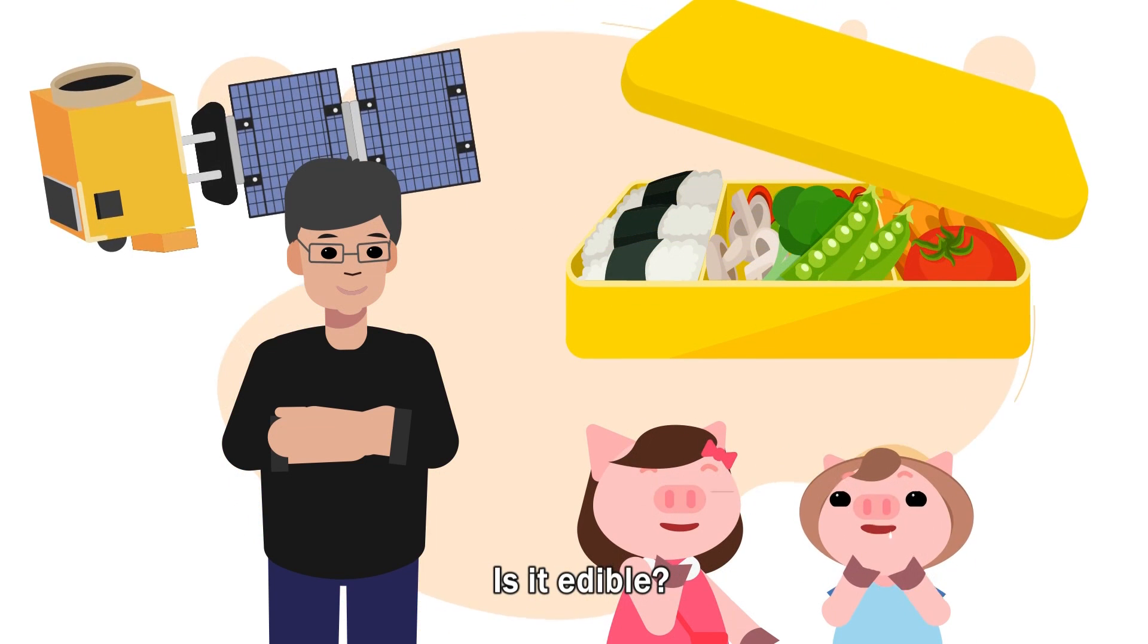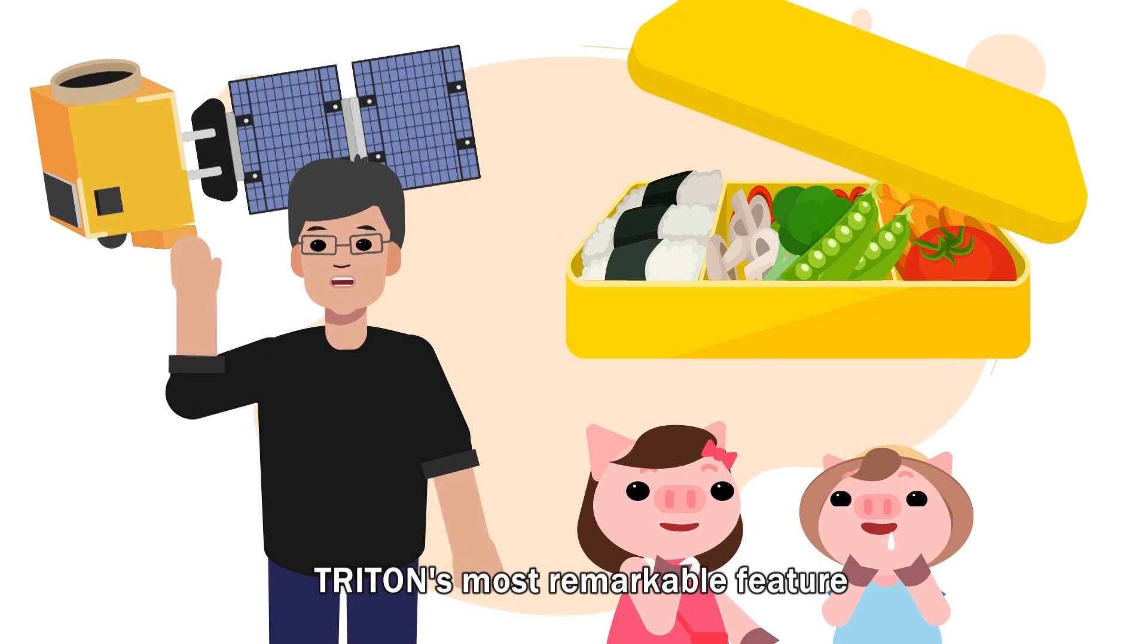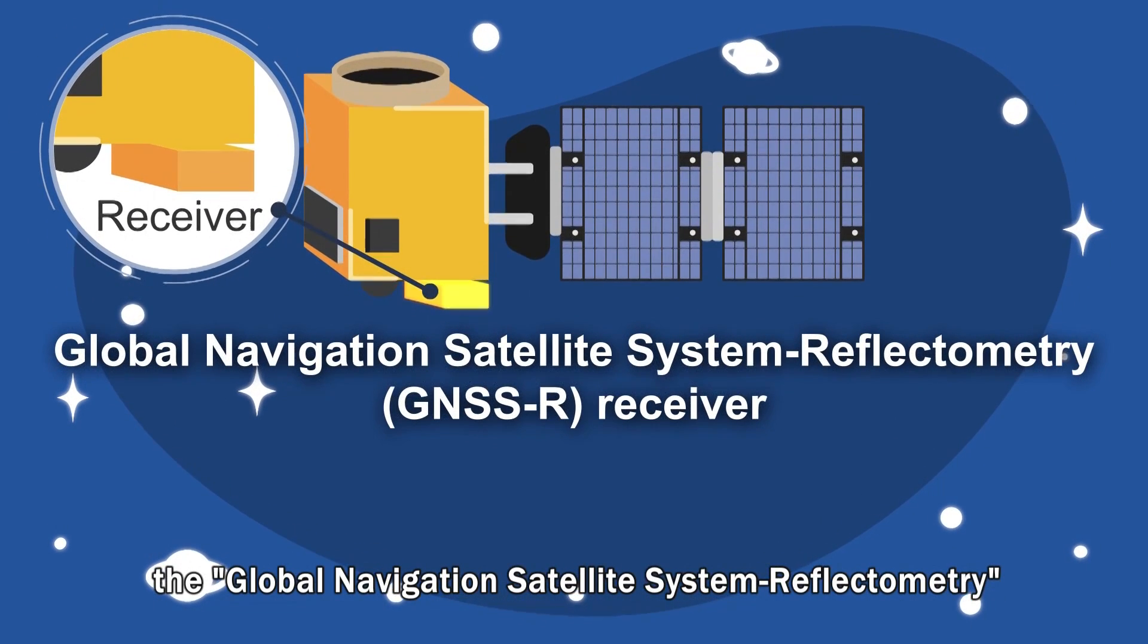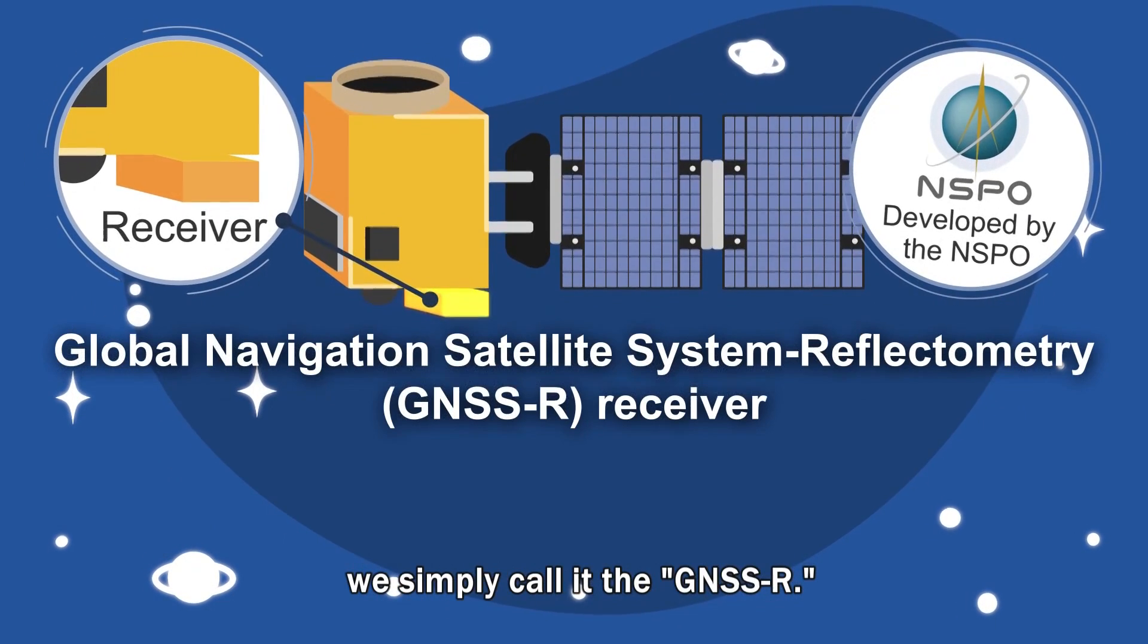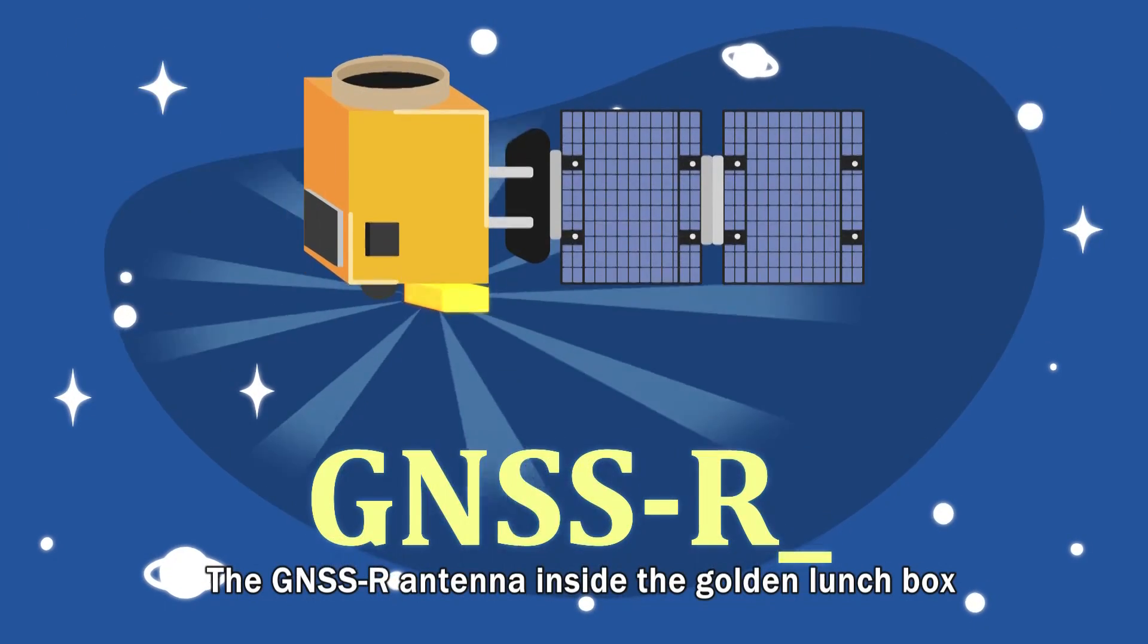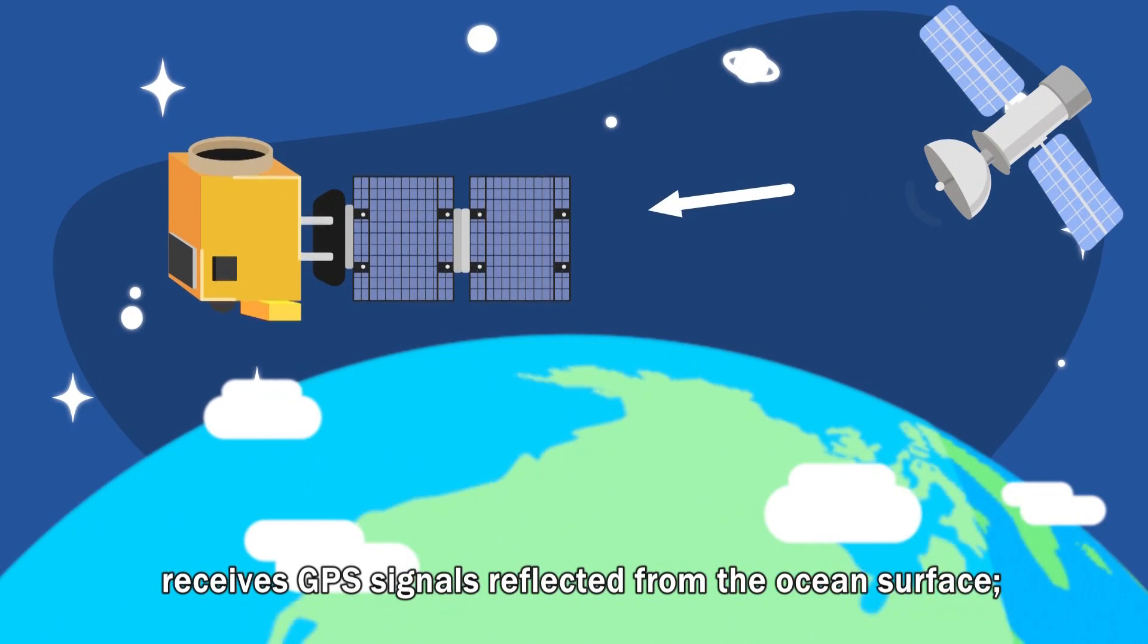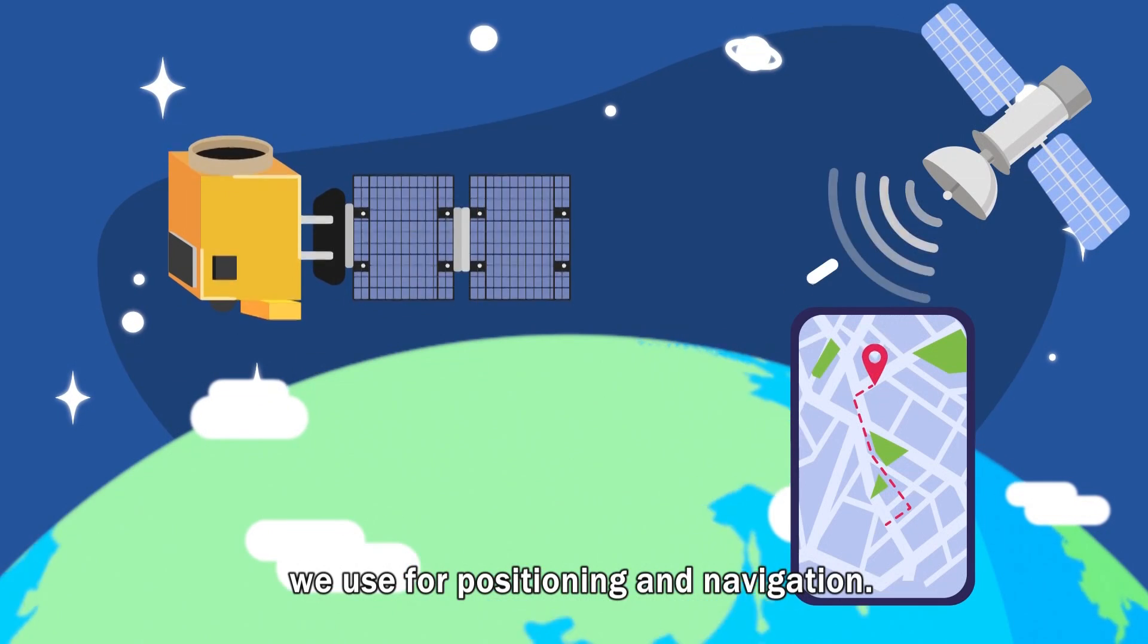What is that? Is it edible? It's not food, okay? Triton's most remarkable feature is its unusual receiver. This is the Global Navigation Satellite System reflectometry receiver developed by Taiwan. We simply call it the GNSSR. The GNSSR antenna inside the golden lunchbox receives GPS signals reflected from the ocean's surface. These emitted wireless signals we use for positioning and navigation.